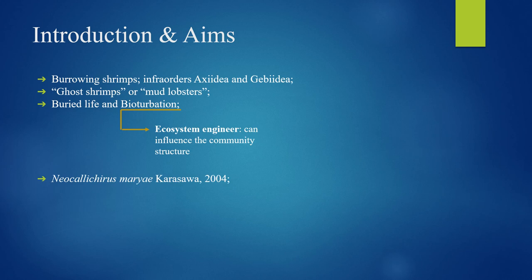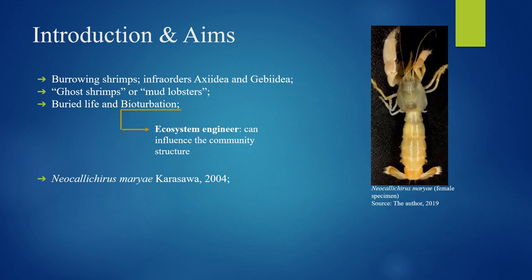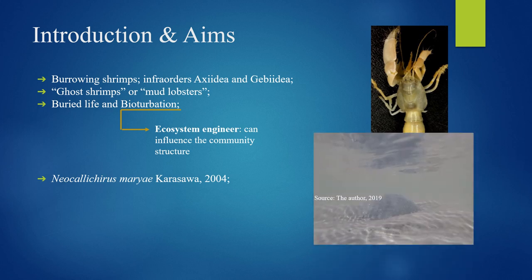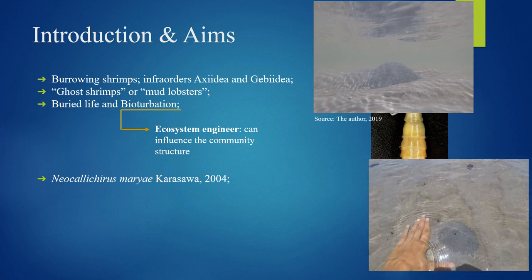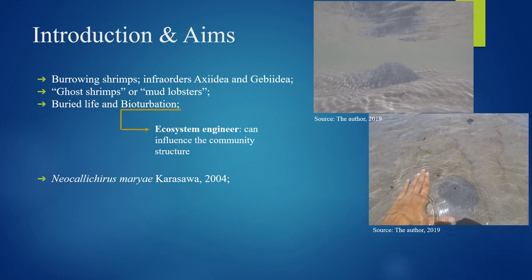Neocalichirus marii is an axiidean that has distribution along the tropical and subtropical Atlantic Occidental Ocean, and commonly constructs galleries with a volcano shape. Although showing huge potential as a bioturbator, there are few researches focused on the population biology of this species.